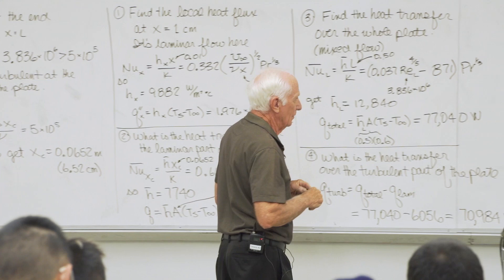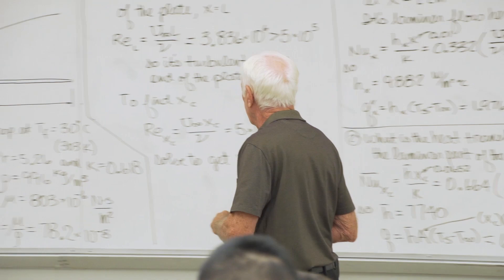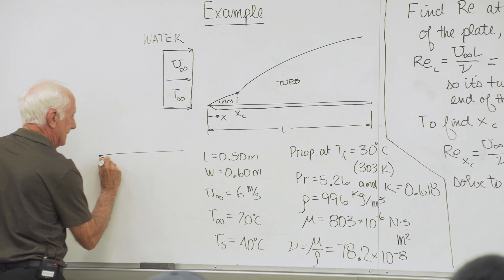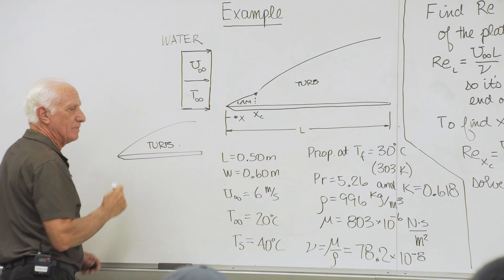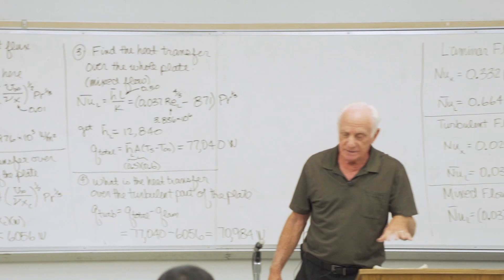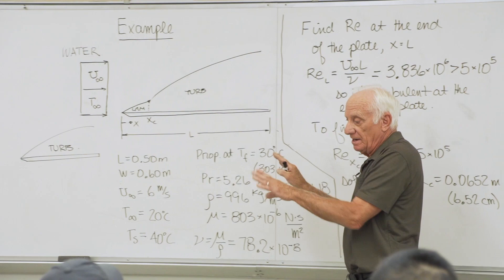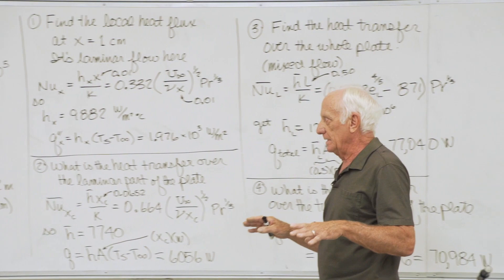When can we use the fully turbulent equation? Only if the problem explicitly states the flow is turbulent from the leading edge. If it says nothing, assume it starts laminar. There is also the 10% rule: if x_c ≤ 10% of L, then assume all turbulent over the plate. In our problem, 10% of L = 0.05 m, but x_c = 0.0652 m, so 0.065 > 0.050 — we cannot apply the 10% rule and must assume mixed flow. The textbook uses a similar 5% rule.